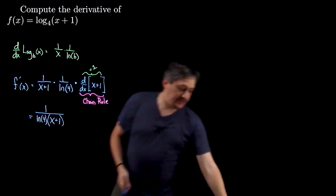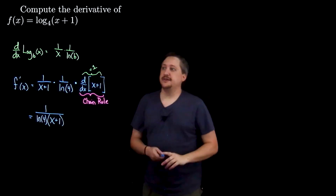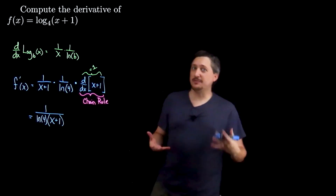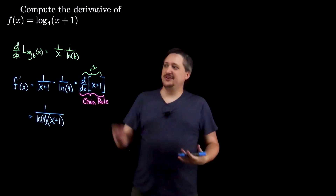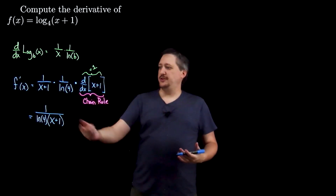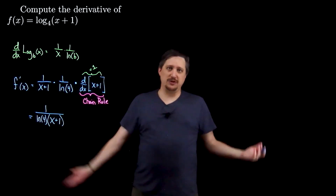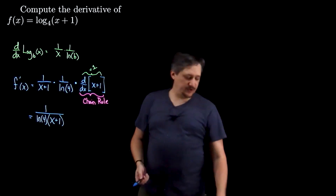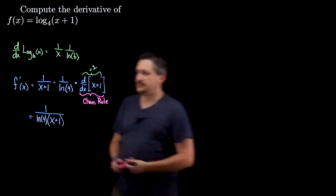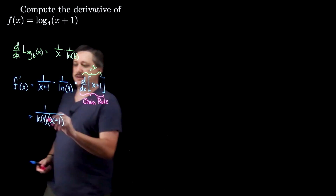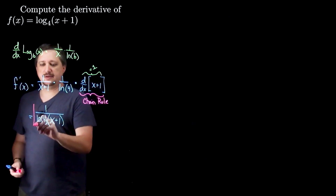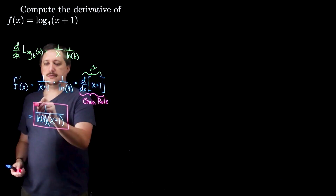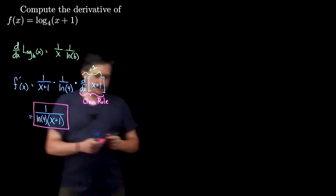Which means that even though it's important to use the chain rule and remember that it's there, it turns out that this is just 1, so I multiply by 1. That doesn't do anything. So that tells me this is my answer.